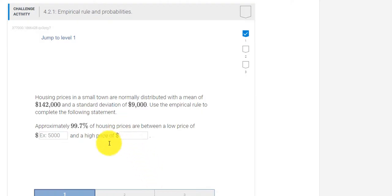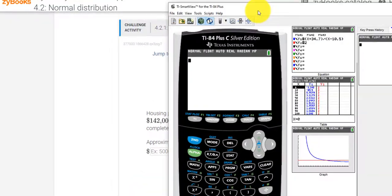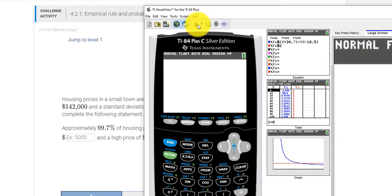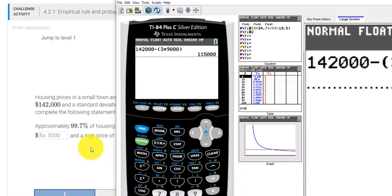So how do we do this? If I take out my calculator and we take the 142,000 and subtract 142,000 minus three standard deviations. So that would be minus three times the 9,000. I press enter. All right, so the lower price would be the 115,000.